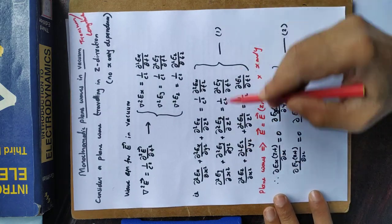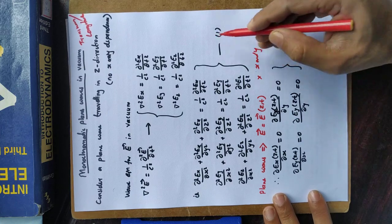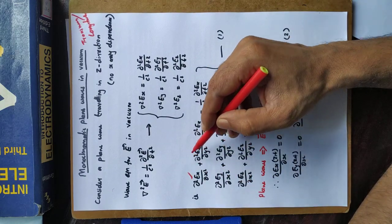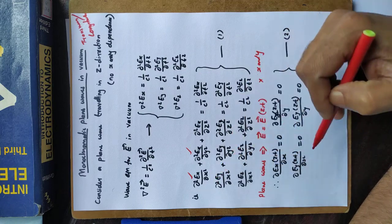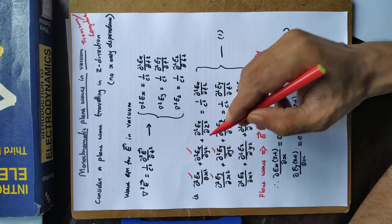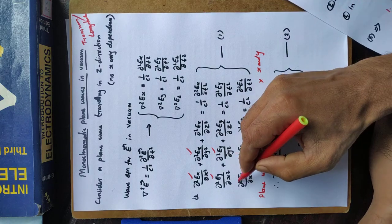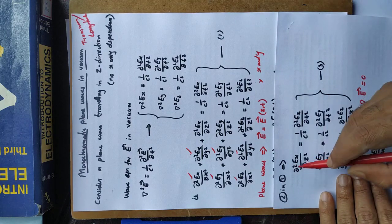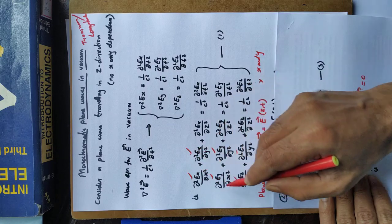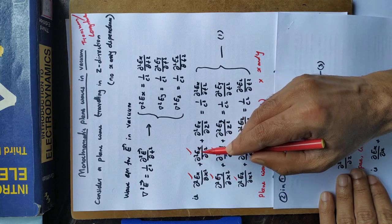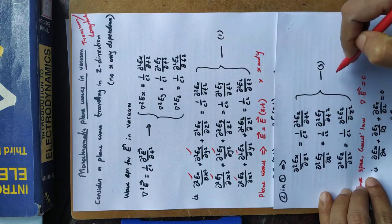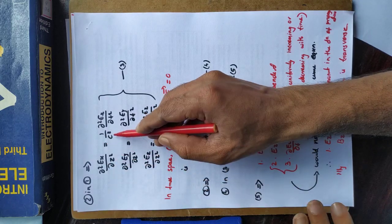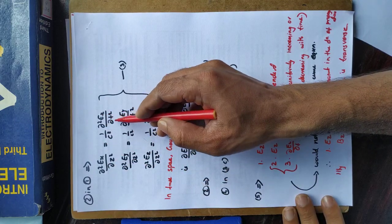Substituting equation two into equation one, the first and second terms in the Laplacian vanish since the electric field components are functions of z only. Equation one reduces to equation three: ∂²Eₓ/∂z² = (1/c²)(∂²Eₓ/∂t²), and similarly for Ey and Ez.